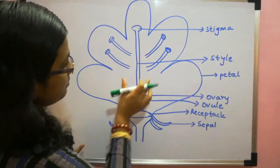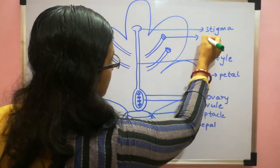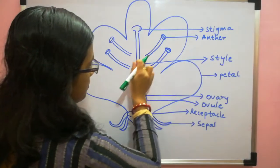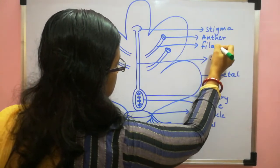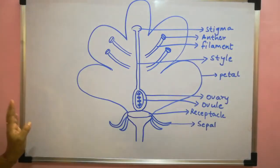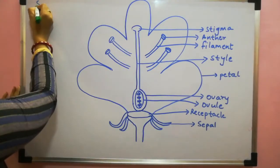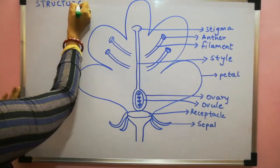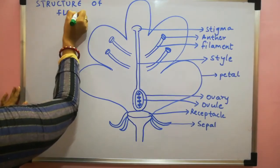Then coming to the male reproductive part. This part anther. And the support part of the anther is known as filaments. So all parts are labeled here. This is structure of flower. The diagram is ready. Thanks for watching.